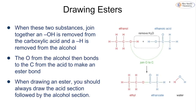Now we look at how to draw the structure of an ester. We draw out the alcohol and carboxylic acid with their functional groups side by side. The ethanol functional group is on the right-hand side and the carboxylic acid functional group is on the left. We then remove an OH from the ethanoic acid and an H from the alcohol — removing water — and the remaining oxygen joins up with the carbon to form the ester group.